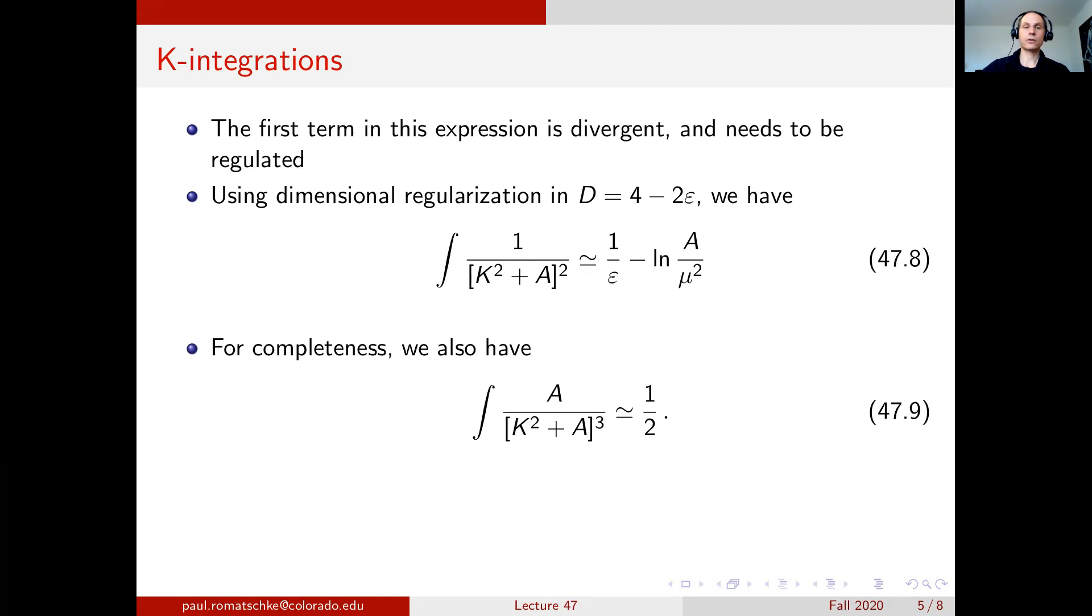For completeness, I will note that the integration of A over denominator cubed is a regular integral. We can use the same function phi that was introduced in lecture 10 to do this integral in terms of gamma functions, and we find that this is just given by the factor of one half.